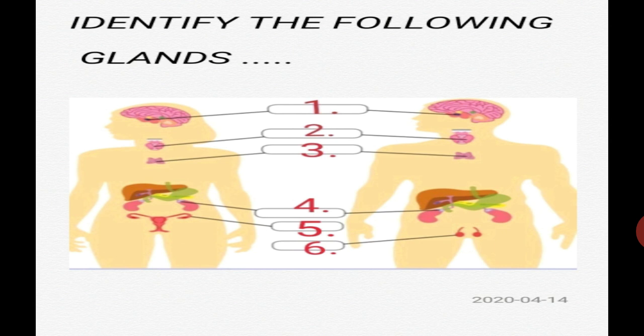Let's look at this diagram, where I have asked you to identify the following glands. Gland number one is located just below the upper end. It is the master gland of the body because it controls the secretion of all other glands. Can you guess the name of this gland? Yes, it is the pituitary gland.